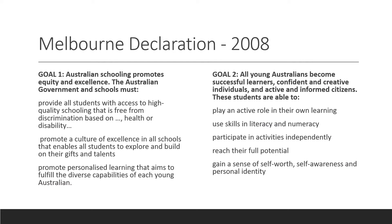The next key element of our legislative policy frameworks is the Melbourne Declaration. This is all of the education ministers — state, federal and territory across the country — getting together in 2008 and making a declaration about what Australian schooling is and what we do. There are two goals there, and some summary information.